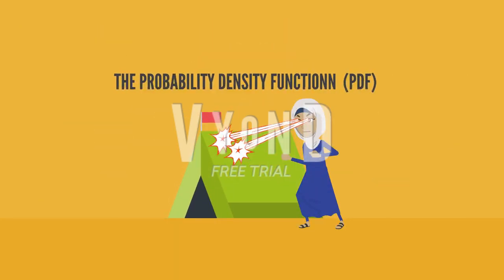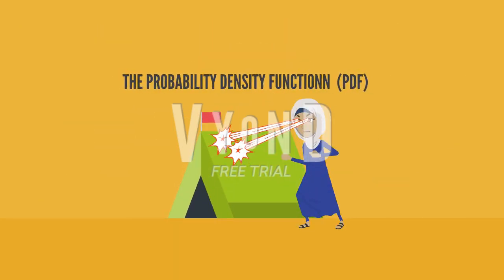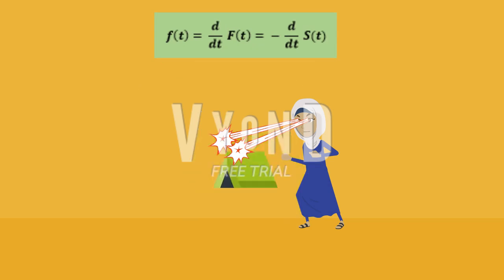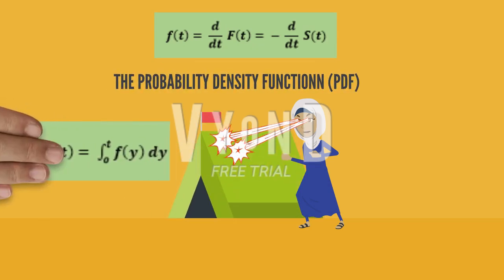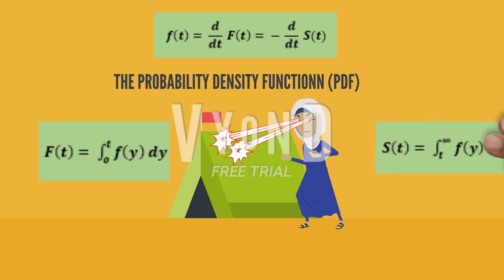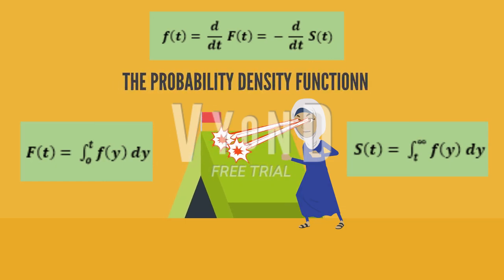For the special case of a continuous random variable, the probability density function is defined as the derivative of the cumulative distribution function. Thus, f(t) is equal to the derivative of capital F, and equal to the negative derivative of capital S. Therefore, capital F equals the integral of the PDF from zero to t, and capital S equals the integral of the PDF from t to infinity. It must be true that capital F plus capital S equals one.